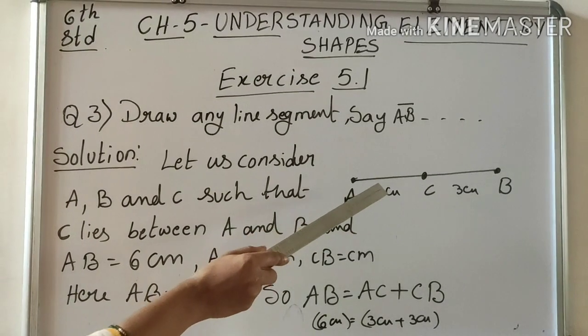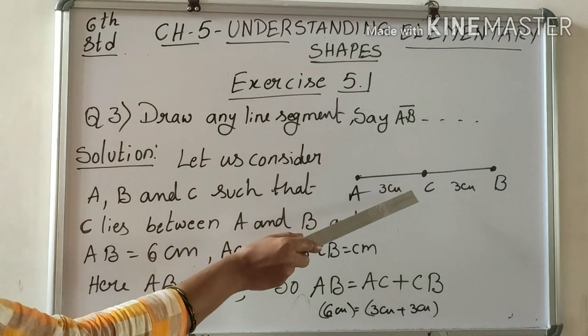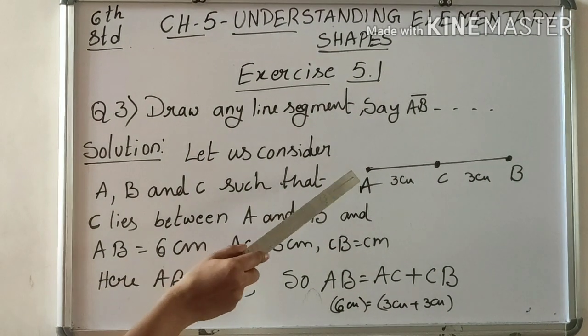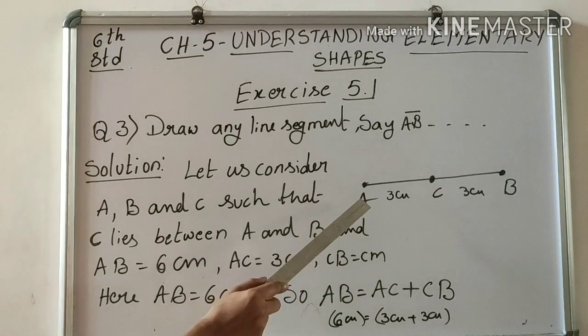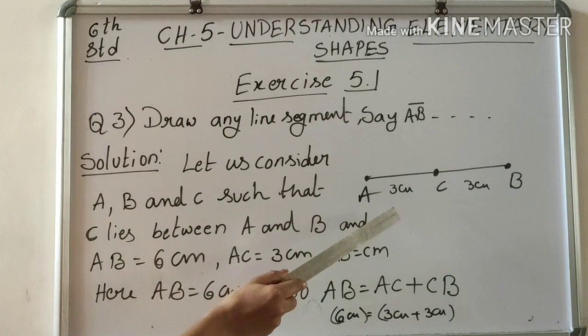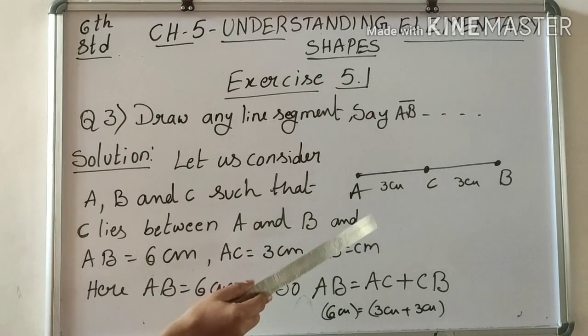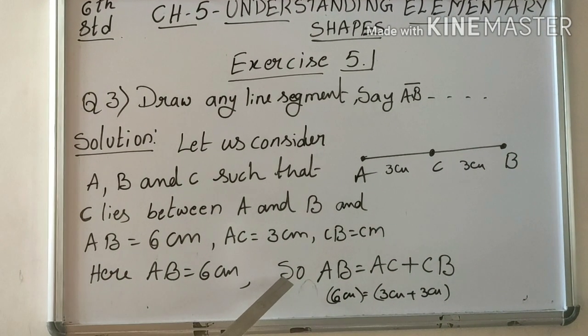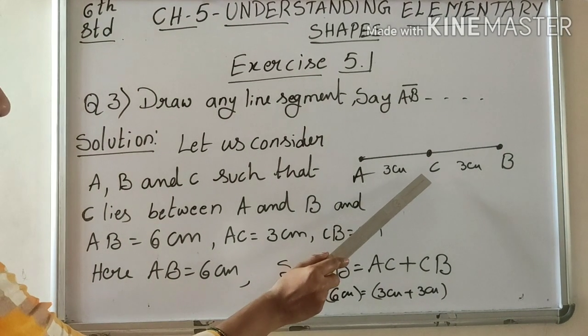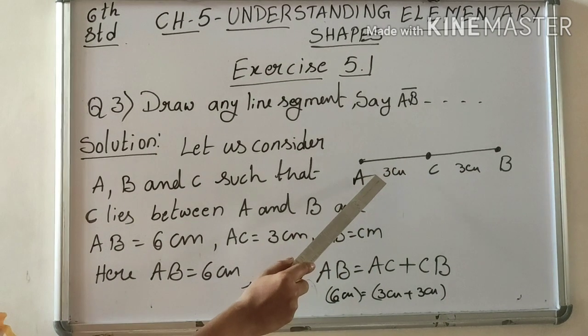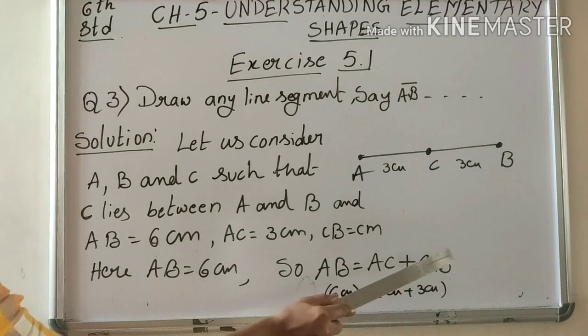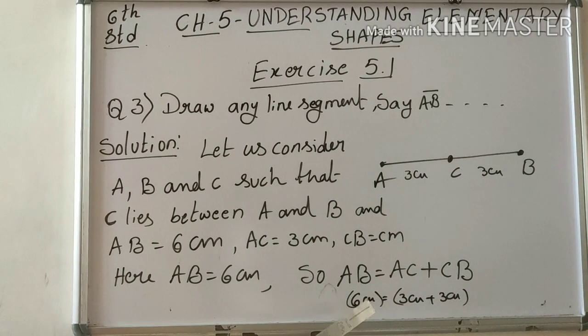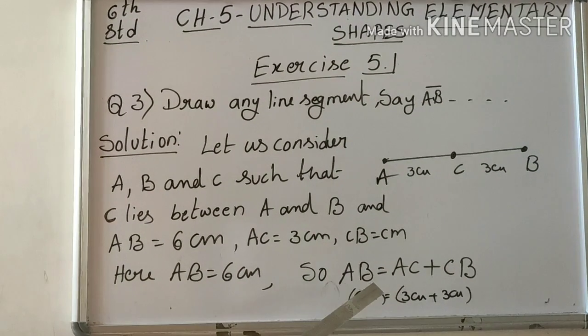That means, three points lenge A, B, C. C center mein hona chahiye, A and B ki beech mein. If suppose AB ki length 6 cm le lenge to AC ki length kitna hoga? 3 cm hoga, BC ki wo bhi 3 cm hoga kyunki C center mein hai. AB equal to 6 cm. So, AB ko kaise likh sakte hain? AC plus CB. AC equal to 3 cm hai, CB equal to 3 cm hai, 3 plus 3, 6 hoga. That means AB equal to 6 cm. So, we can write AB equal to AC plus CB.